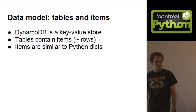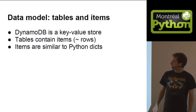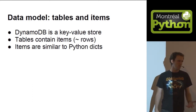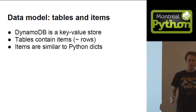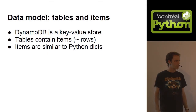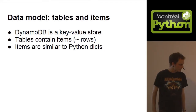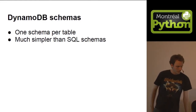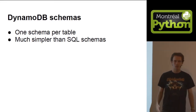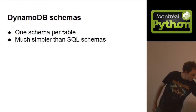DynamoDB, unlike MongoDB which is a document store, is a key-value store. It's based around tables which contain items that are basically Python dictionaries with a few limitations. But unlike document stores, there is no nesting allowed and you can't have complex queries. The only thing you need to specify is the schema for each table, which is much, much simpler than SQL schemas.